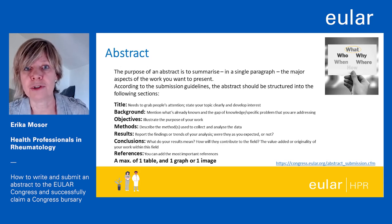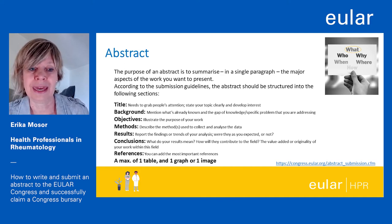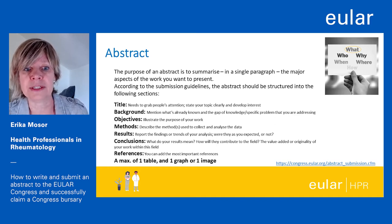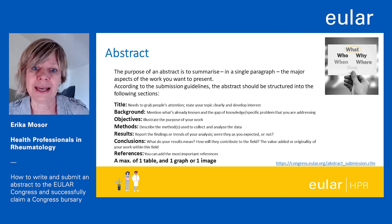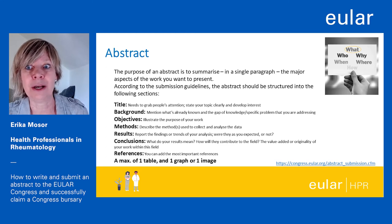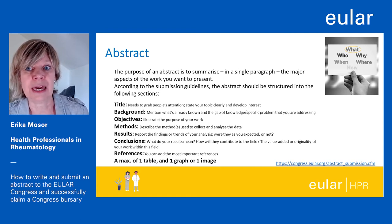As mentioned before, the purpose of an abstract is to summarize the major aspects of your research work. When writing an abstract it's important that you always follow the submission guidelines, which you can find by using the link shown in the slide. It's also mandatory to use the abstract word template provided by the system. You should structure your abstract into the following sections. First of all, the title — it needs to grab people's attention, state your topic clearly, and develop interest in the reader. The background is about mentioning what's already known and the gap of knowledge or the specific problem that you are addressing in your work.